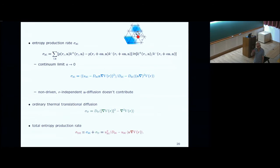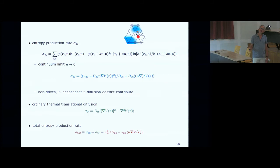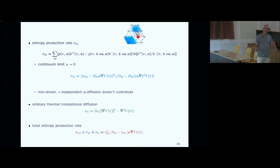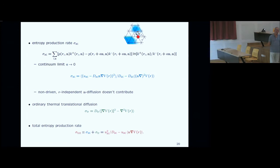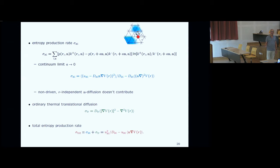Putting this particle into a potential so it has to run uphill, the rates must be modified: the ratio of forward to backward rates has to involve the potential difference on both sides, maintaining thermodynamic consistency. The entropy production associated with this active process is just given by the standard rules: the current times the log ratio of rates. Taking the continuum limit — sending lattice constant A to zero while keeping mean velocity U and dispersion fixed — you get the physical entropy production: the gradient of the potential times the direction of motion divided by the dispersion coefficient D.